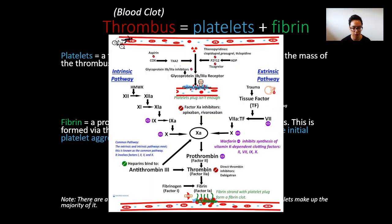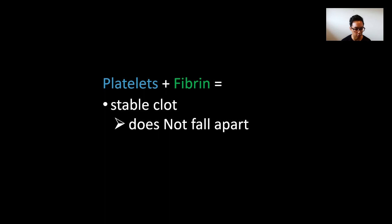Going back to the clotting process chart, I've broken it into two separate parts. The top half is the platelet aggregation section, where we're forming the platelet plug. After that platelet plug is formed, we activate the coagulation cascade to form fibrin, which reinforces the platelet plug to create a stronger clot. In its simplest form: platelet plus fibrin equals a stable clot.